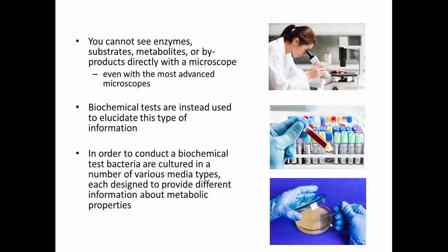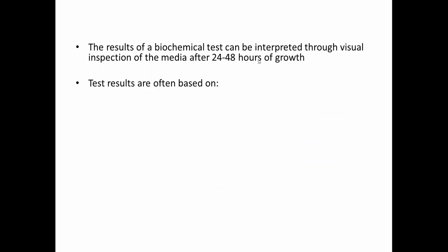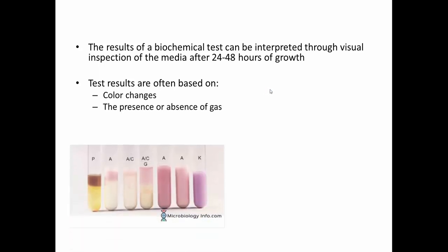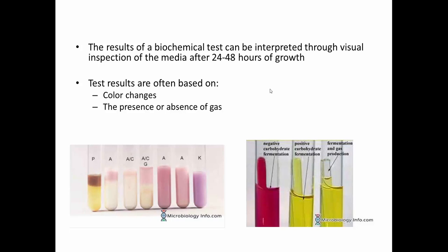It's not just used to grow them — it's used to grow them in a way that highlights their metabolic differences. It starts just like any other media: we culture them and let that grow for about 24 to 48 hours. Once the test is done growing, we look for results such as color changes and the production of gas. Every test is a little bit different, but in general the tests are going to change colors, put off a gas, or sometimes both. You have to be able to look at each type of test and know how to interpret what those color changes mean and what the presence or absence of gas means.